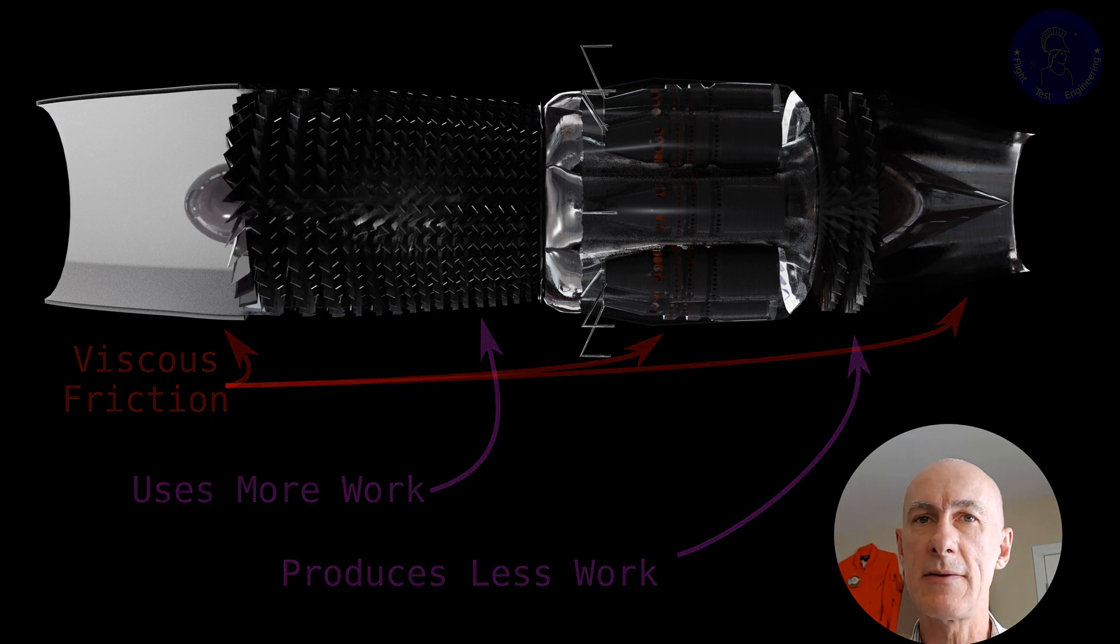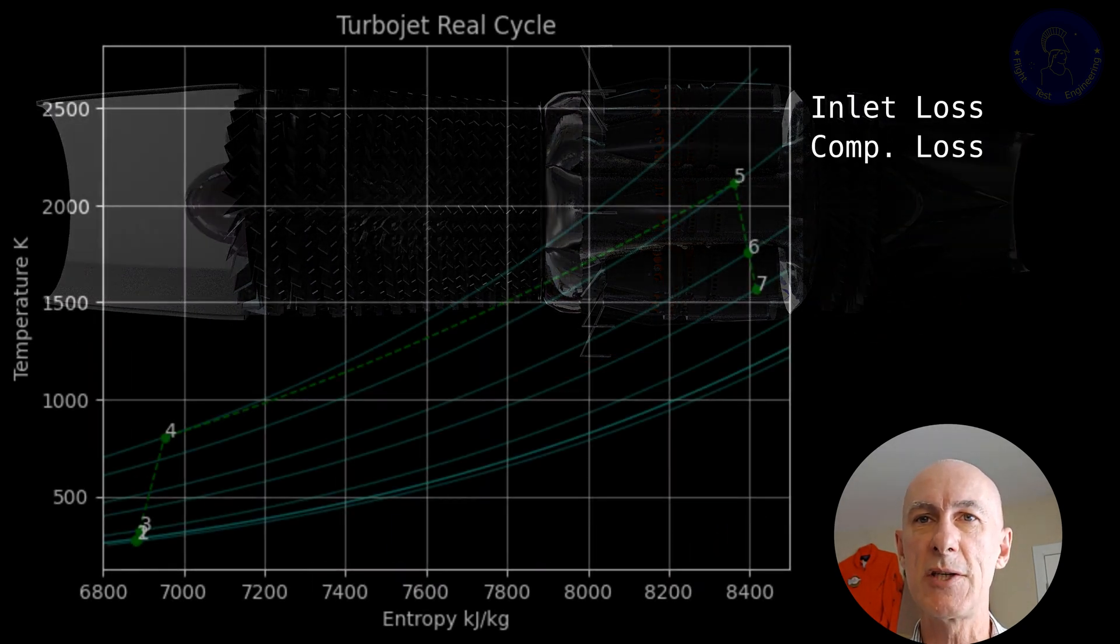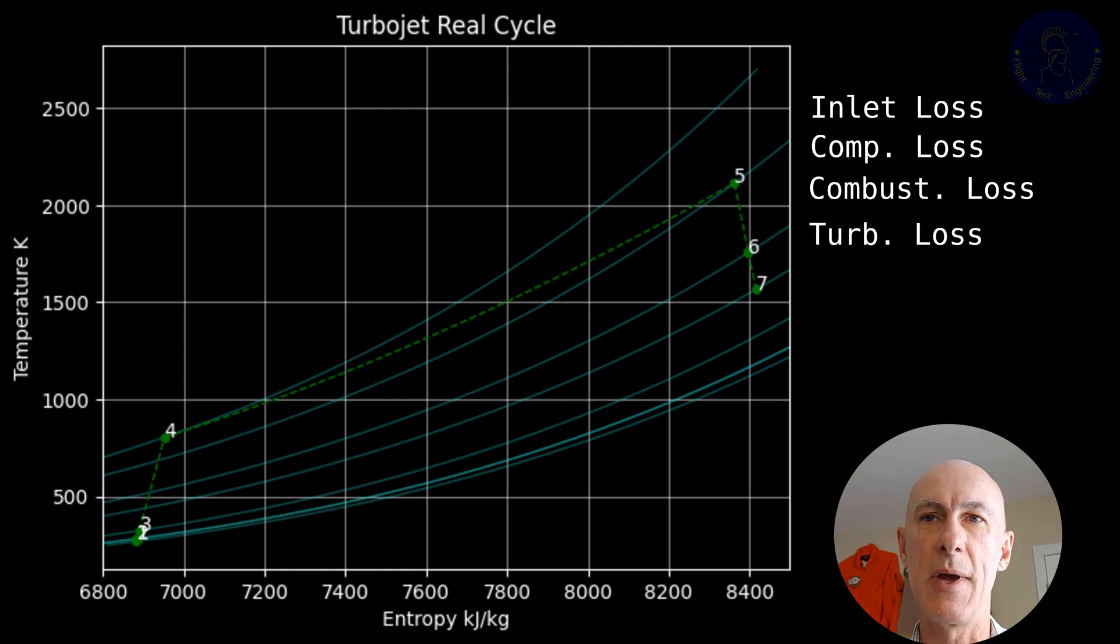And with all that, in reality, the cycle looks much more like this when we introduce the many losses. Let's build on top of this concept and break down each component: the inlet, the compressor, the combustor, the turbine, and nozzle. And then we can introduce the inefficiencies to approximate better what happens in the real world for each of the components.